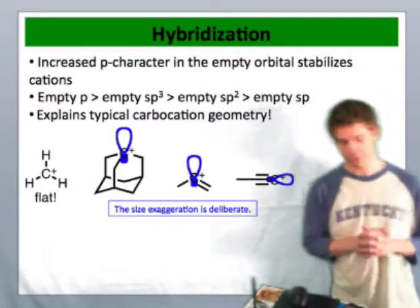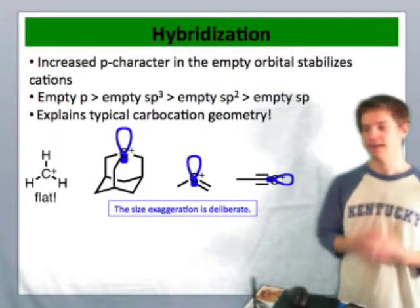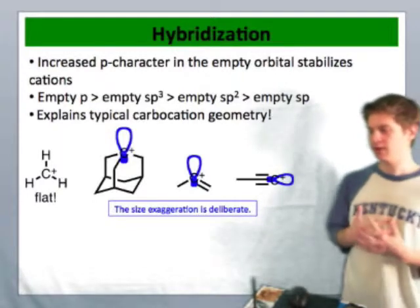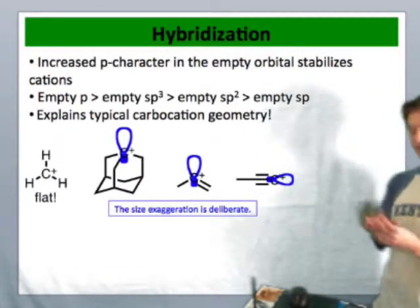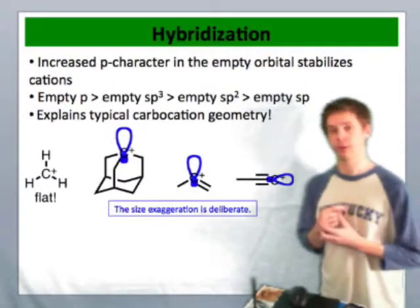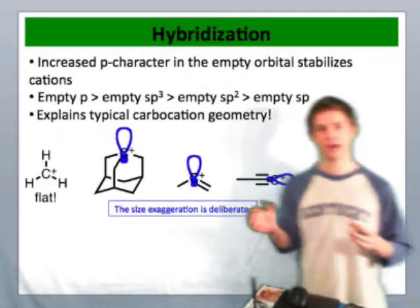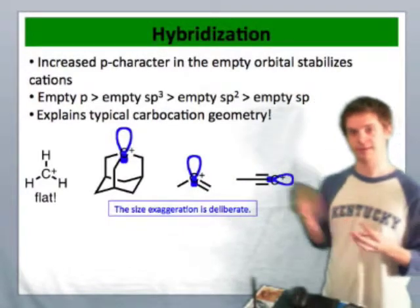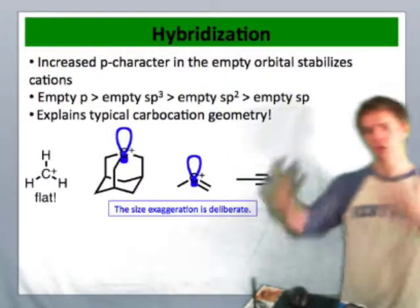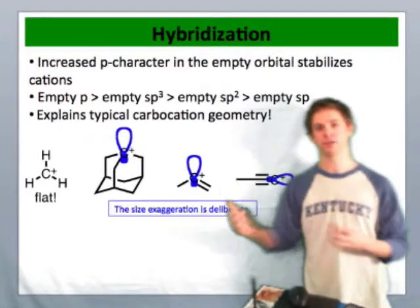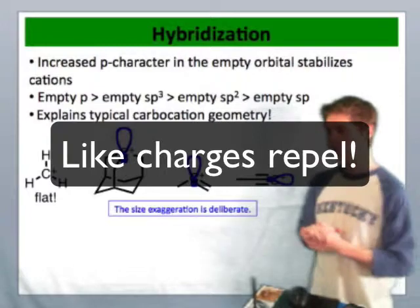The second factor associated with the stability of cations is hybridization. Hybridization refers to the hybridization of the empty orbital in the cation, and this is a very important point to grasp. Positive or empty orbitals want to be as far away from the nucleus as possible in order to be as stable as possible. In a sense, the empty orbital is holding the positive charge, and the farther away it is from a positively charged nucleus, the more stable it is.